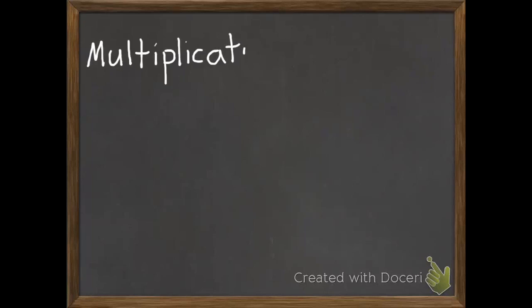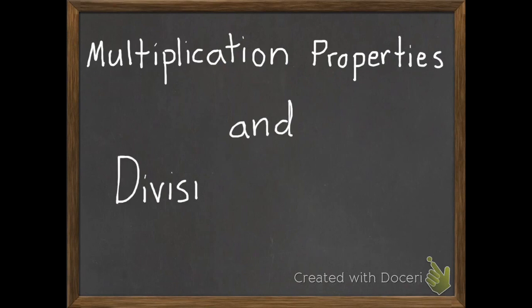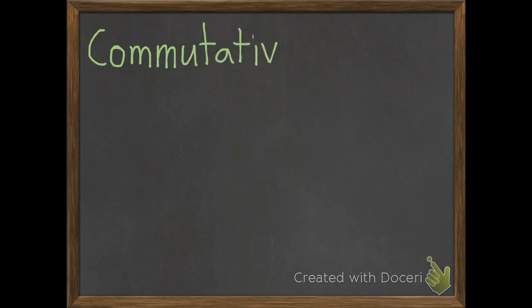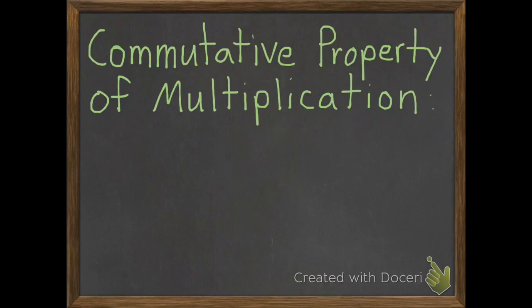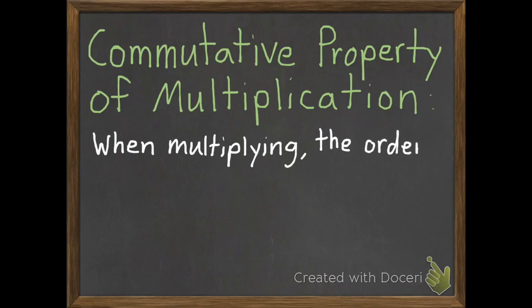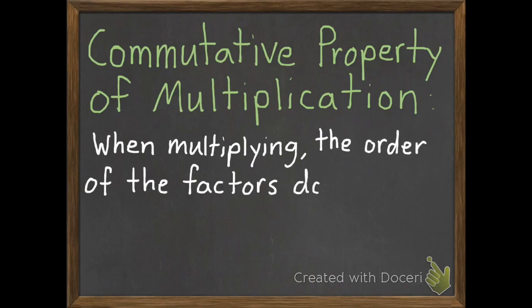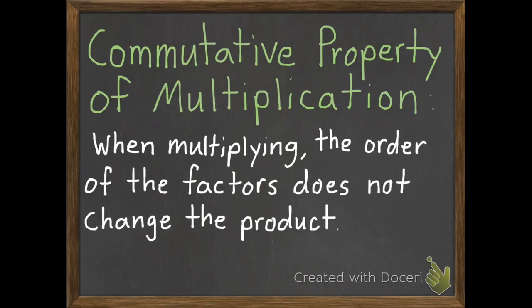Today we will be learning the multiplication properties and division rules. Our first multiplication property is the commutative property of multiplication. The commutative property of multiplication says that when multiplying, the order of the factors does not change the product.